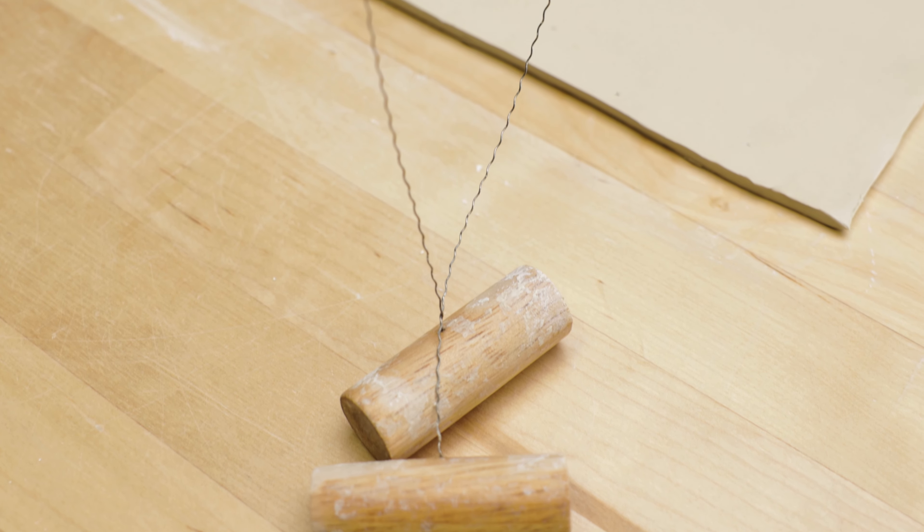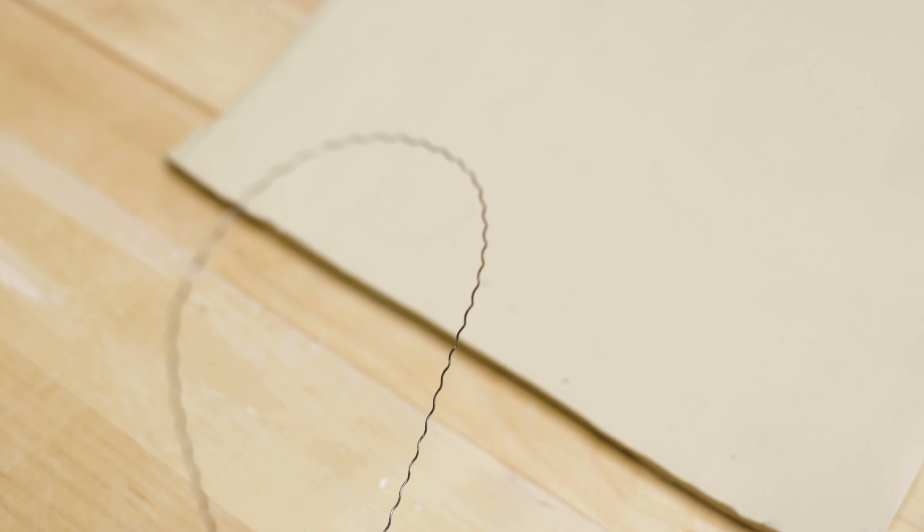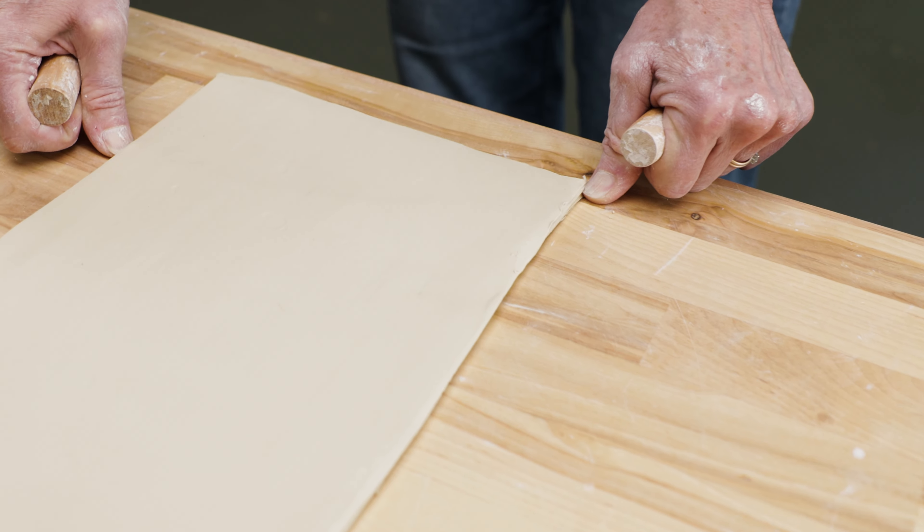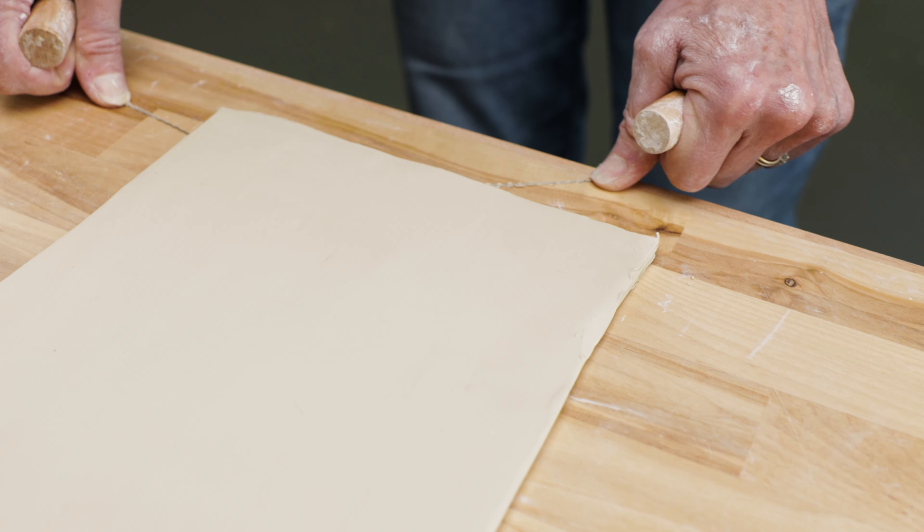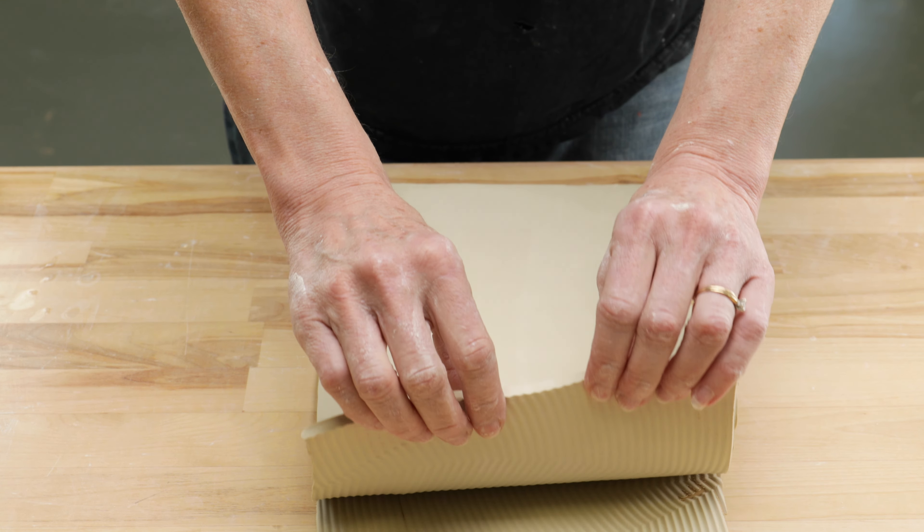This next part involves using a wiggle wire. This particular one is a Bill Van Gilder wire. I held it tight and flat to the table surface and wiggled it, one side at a time, under the entire slab. I love this reveal. You can vary your wiggling technique for different looks.